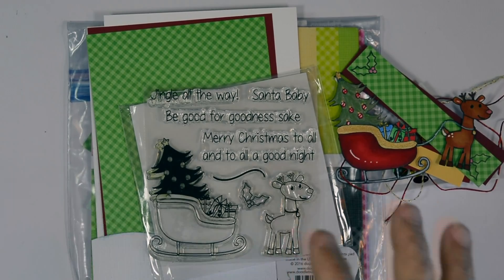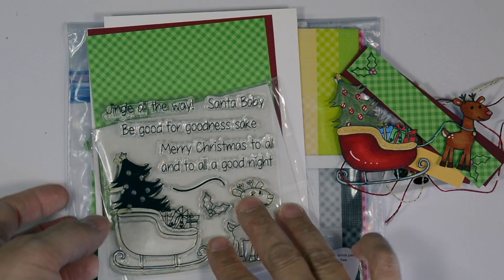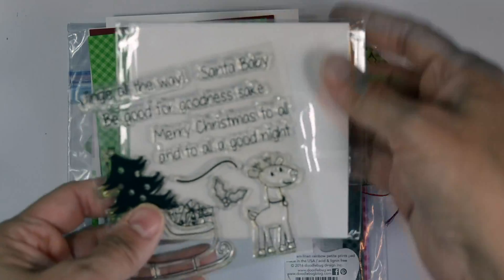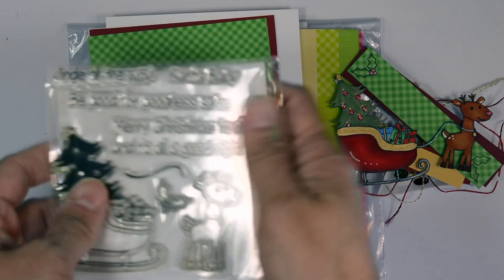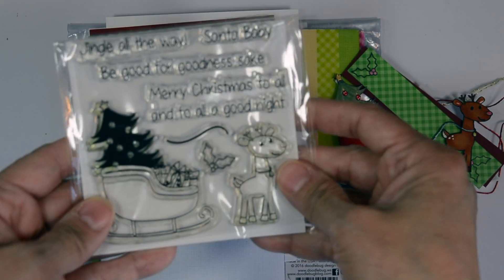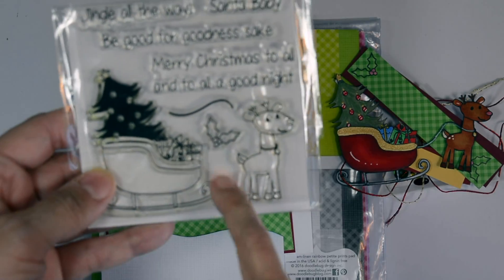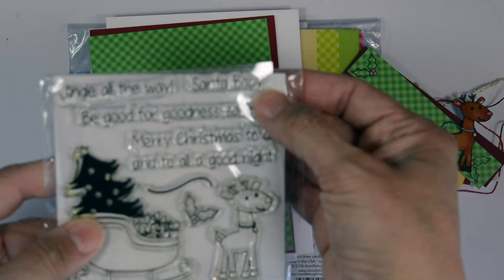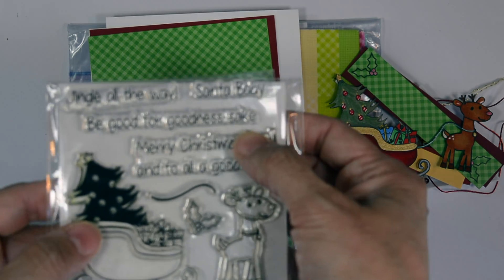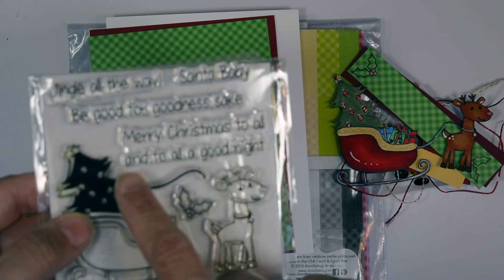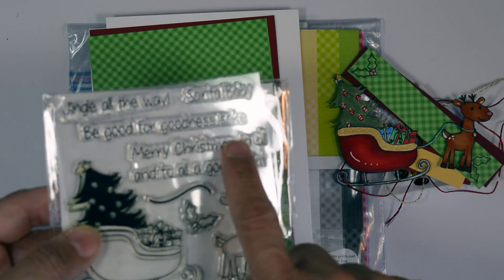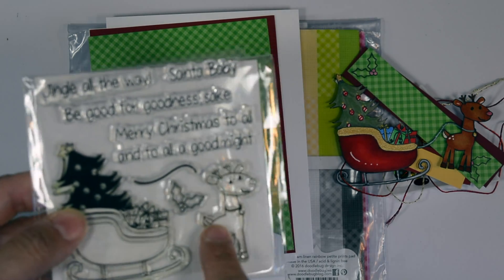Let's go over some of the products I use. From Paper Sweeties, the Jingle All The Way stamp set. This stamp set has an adorable reindeer on here, and a sled, some holly and berries, a little tie for the sled and reindeer, and a variety of sentiments. We'll be using Jingle All The Way and Merry Christmas, because it says Merry Christmas to all and to all a good night. We're only going to use the Merry Christmas.